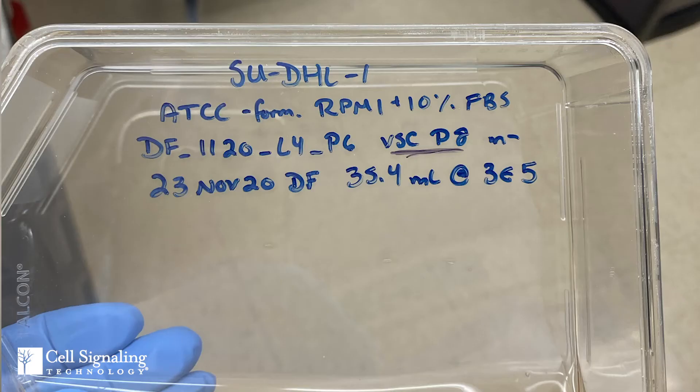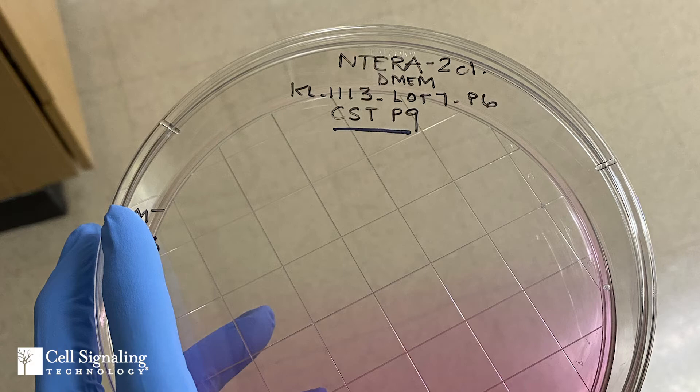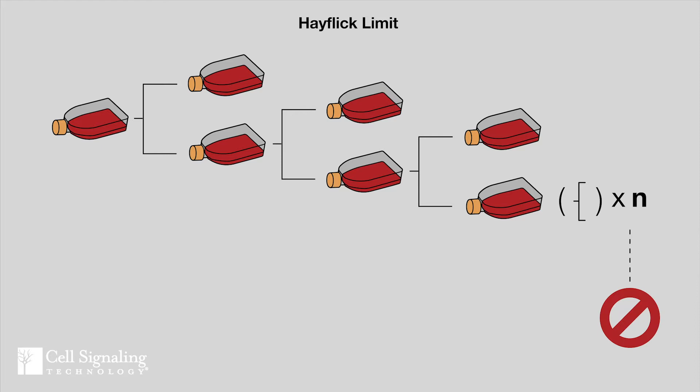When propagating cell lines, a best practice is to mark the passage number on the culture flask or dish and carefully track the number of times cells have been split. If you continue splitting non-transformed cells long enough, you'll eventually observe that they slow and then stop dividing. This finite limit of the number of times cell populations will divide before becoming senescent is known as the Hayflick Limit, reported in a 1961 paper by Hayflick and Moorhead.